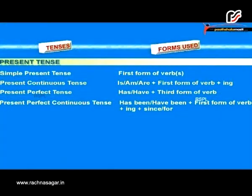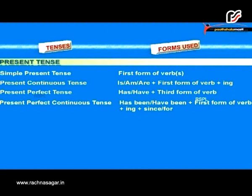Now let us talk about tenses and their form used. In simple present tense the form used is the first form of verb. In present continuous tense the form used is am/are plus first form of verb with -ing. In present perfect tense the form used is has/have plus third form of verb.